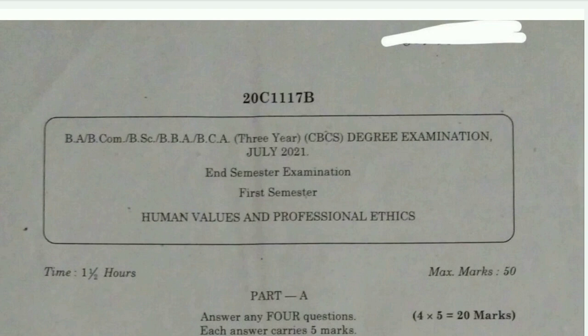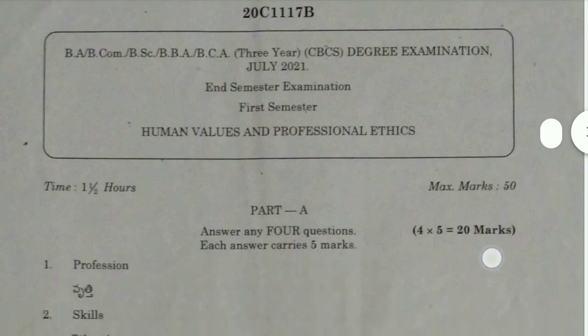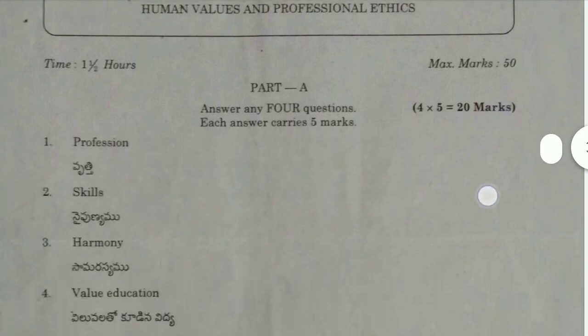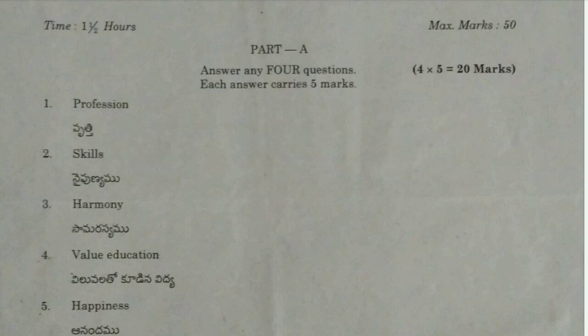So, coming to this video — Human Values and Professional Ethics. In this paper we have 4 short steps. The timing is one and a half hours to two hours for this paper.